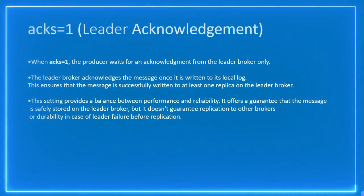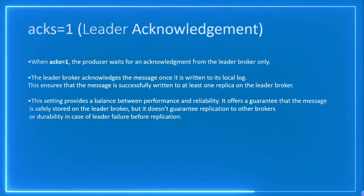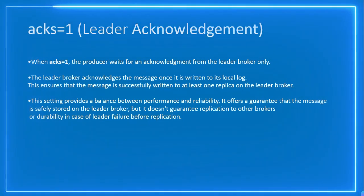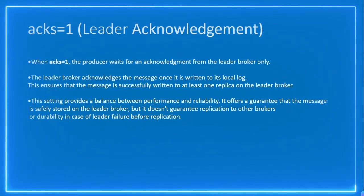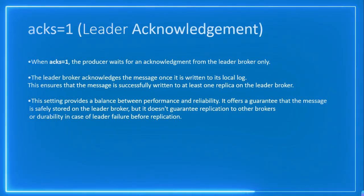In a Kafka cluster there will be many replicas of the broker — one leader broker and follower brokers. If the leader is down, a follower will become the new leader. ACK=1 provides a balance between performance and reliability, guaranteeing the message is stored on the leader, but not guaranteeing the followers have received it. If the leader goes down after acknowledging but before replication, the new leader (a follower) won't have the message, resulting in data loss.